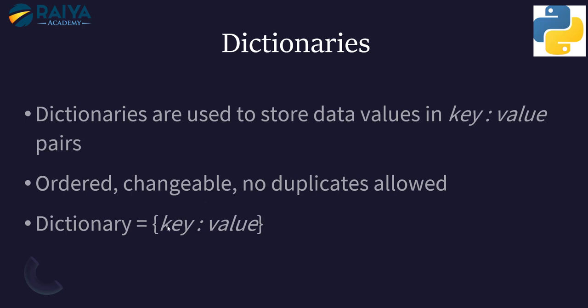The keys are unique within the dictionary and dictionaries are indexed by their keys. These keys can be any unchangeable type — like strings, numbers, or even tuples. You cannot use lists as keys since they are changeable. Let's dive into some examples to learn more about dictionaries.